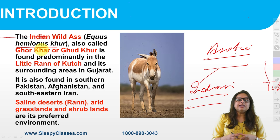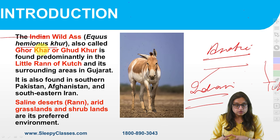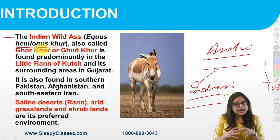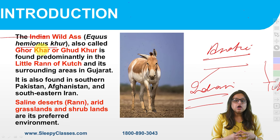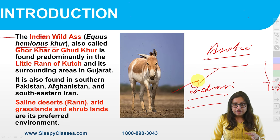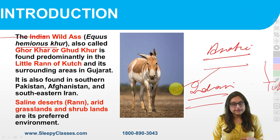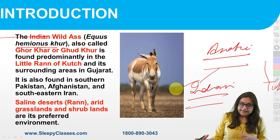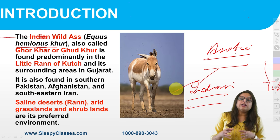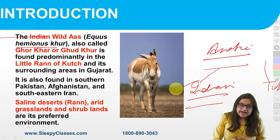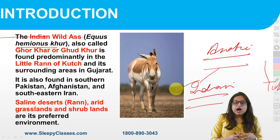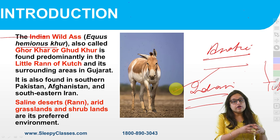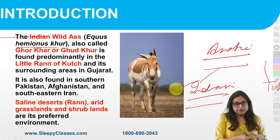I would like to remind again: Asiatic Wild Ass is a species. Within that, we have Indian Wild Ass and Tibetan Wild Ass. Tibetan Wild Ass is found in Ladakh, and also in Tibet. And if we talk about Indian Wild Ass, it is found in the Little Rann of Kutch in India.